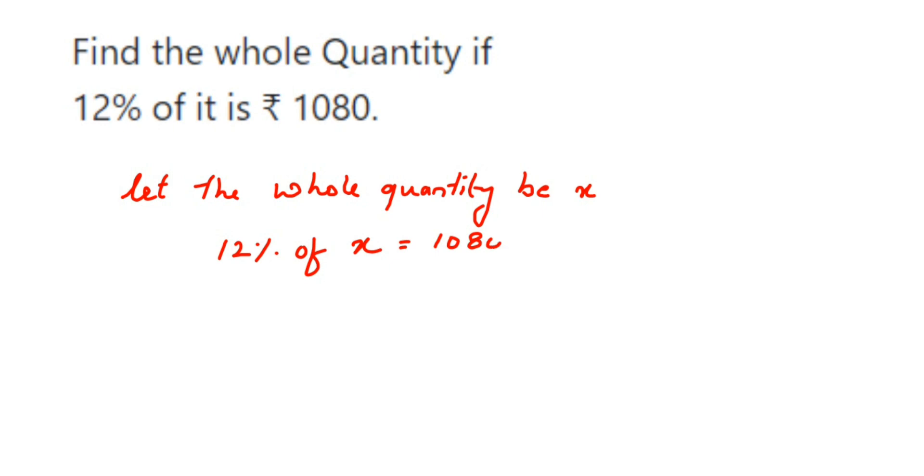Right, now we have to open this. 12% means 12 upon 100. Remove the percentage sign, divide by 100. Of means multiplication, and then x is equal to 1080. Now we have to transpose 12 and 100 to the other side.